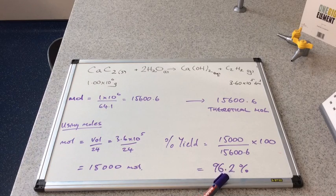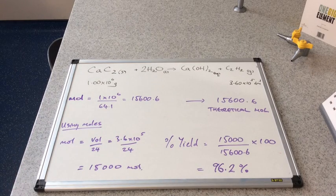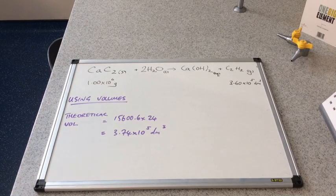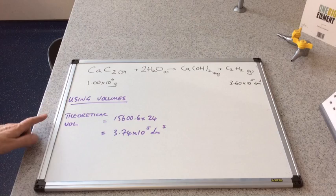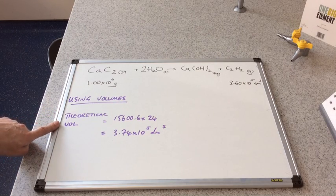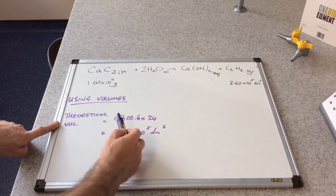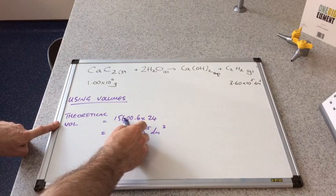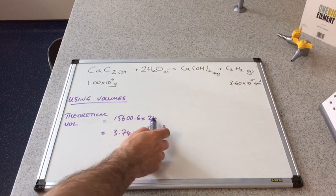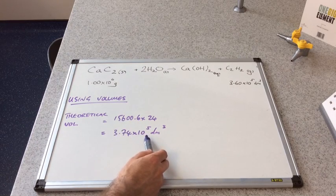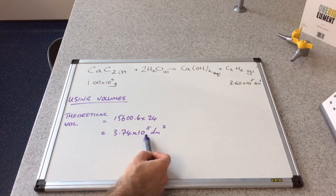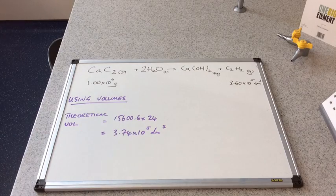If we just remember that number, we'll do it by another method now and see if we get the same answer. We should. In the other method we're going to use the volumes. The first thing we need to do is work out the maximum theoretical volume that would be possible from the maximum theoretical moles of 15,600.6. To work that out, it's the moles times 24 gives us the volume in decimetres cubed. This is the maximum amount of gas we could produce from these moles.